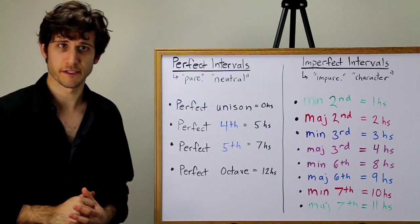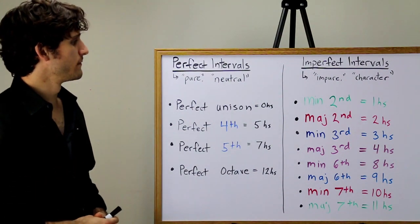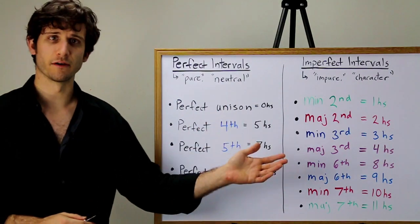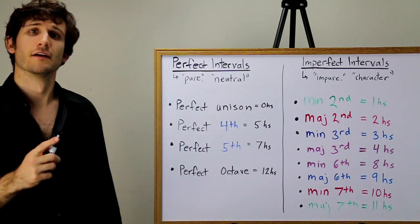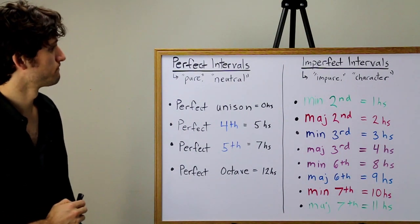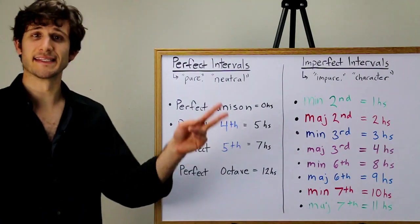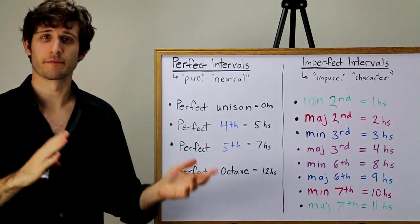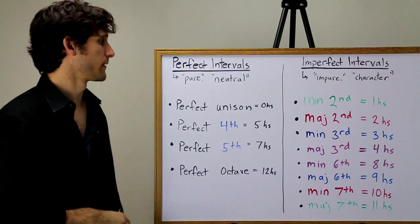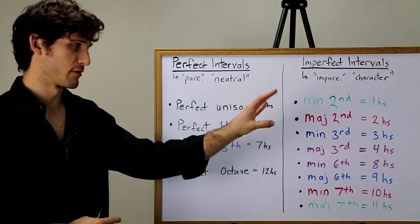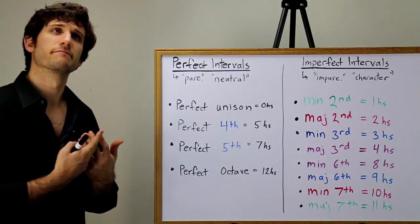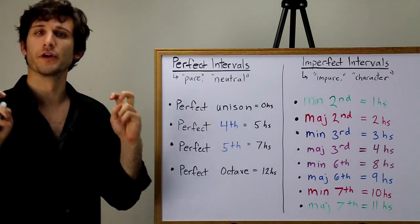So first things first. Why are some intervals called perfect and other intervals are called minor and major? We have to dig into a little bit of history to get this right answer. So it turns out that back in the day, maybe like up through the 15th century or so, intervals were separated into two categories, perfect intervals and imperfect intervals.